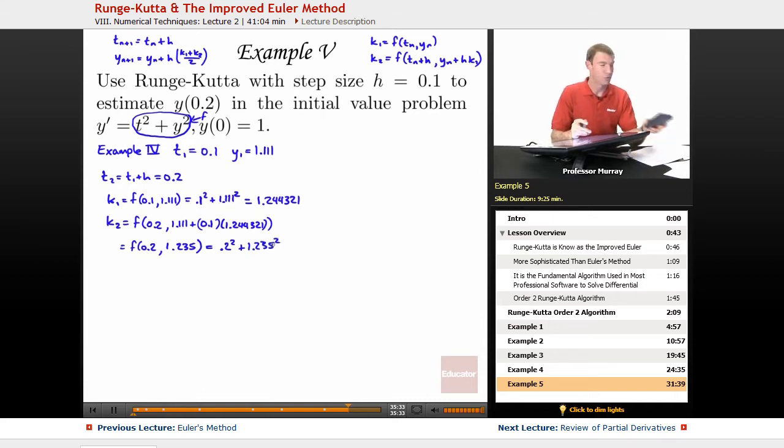I'm going to calculate that out on my calculator, and I see I've got 1.566 for my k2. Now I'm ready to drop all those numbers into my formula for y_n+1.